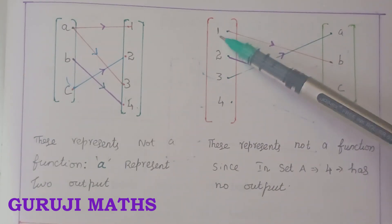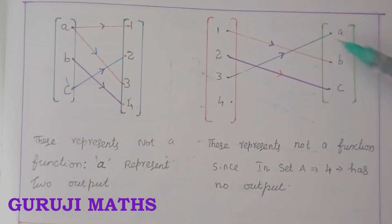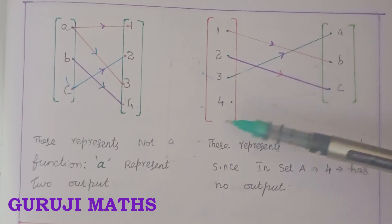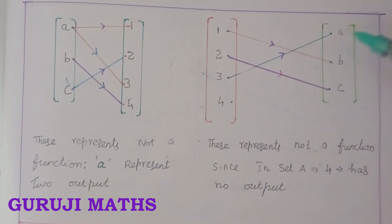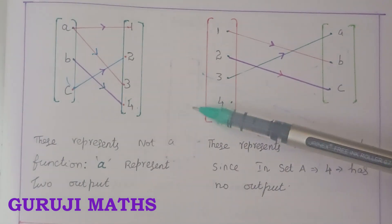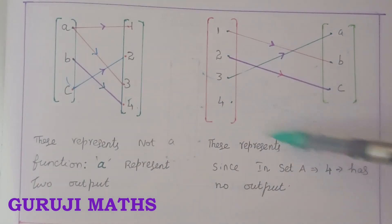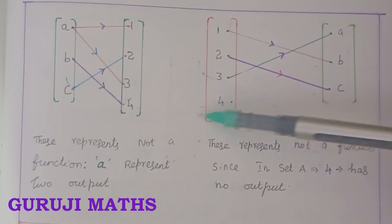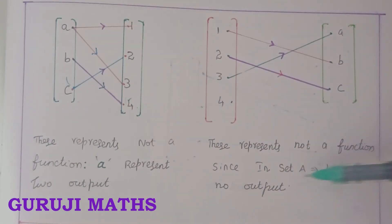One maps to one output, two maps to one output, three maps to one output. But four has no output at all. Since four has no output, it is not possible, and therefore this is not a function.